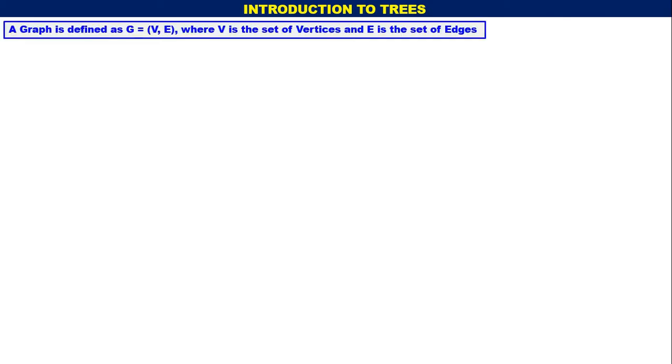My dear students, in this video we will discuss the introduction to trees. A graph is defined as G is equal to V, E, where V is the set of vertices and E is the set of edges.